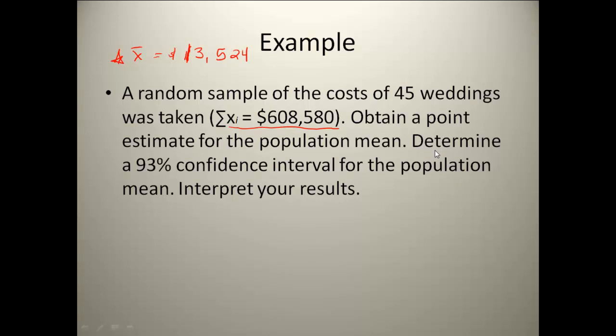Okay, the second part says determine a 93% confidence interval for the population mean. So now since it wants the confidence interval, it wants that range of numbers. We have actually already done these types of problems, but we just didn't call them this.